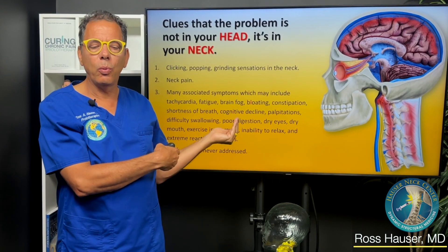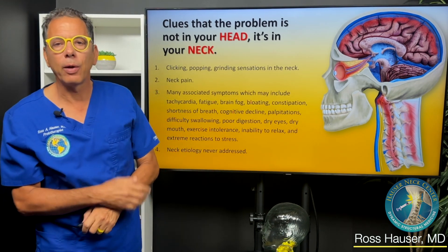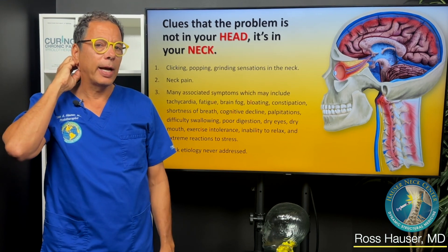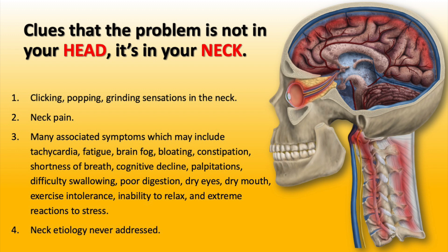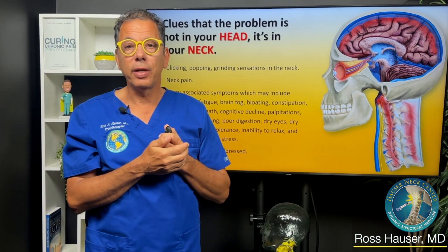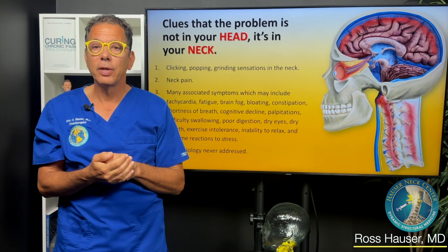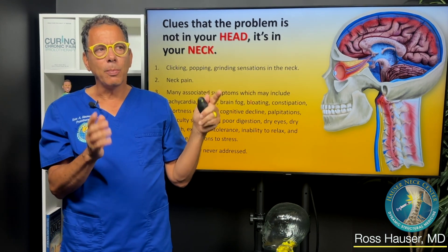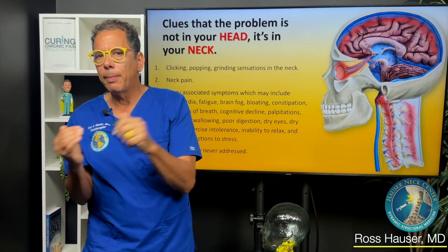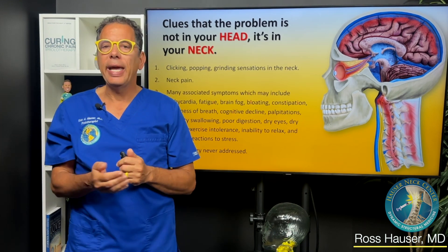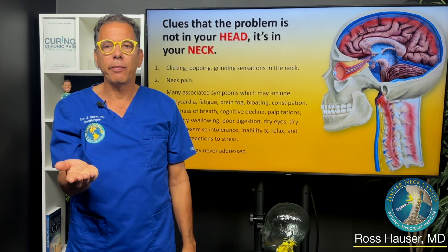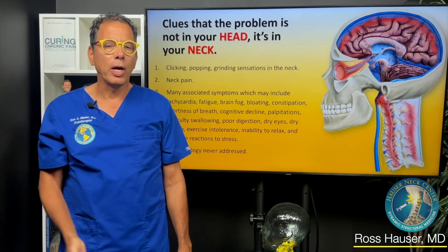How would you know whether your cerebral spinal fluid problem is related to the neck? Well, if you have clicking, popping, grinding of the neck, neck pain, and the other associated symptoms related to ligamentous cervical instability — such as fatigue, bloating, palpitations, cognitive decline, difficulty swallowing, ringing of the ears — and the average person I see here has around 10 symptoms. Is it more likely that they have one underlying problem or 10 separate problems? Common sense says they probably have one main problem, likely related to fluid flow into and out of the brain from a structural neck issue.